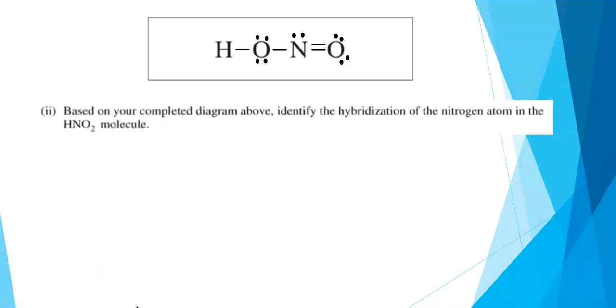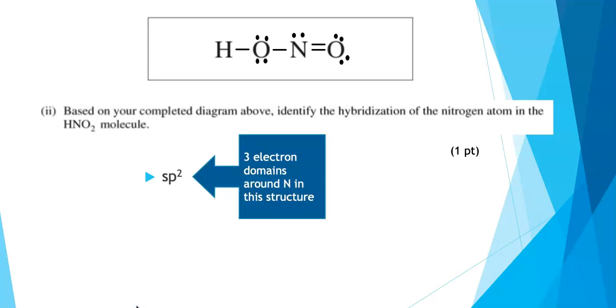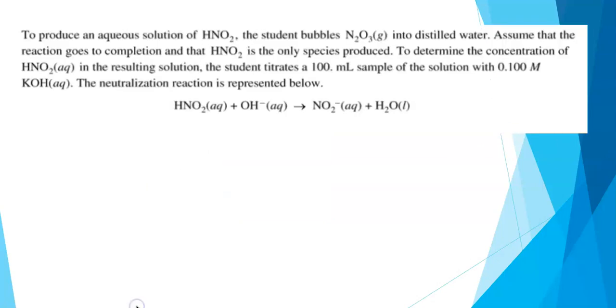The next part asks you to work with the structure you drew. Your answer for part two here needs to be consistent with the Lewis structure. Identify the hybridization of the nitrogen atom in the HNO2 molecule. This was scored out of one point. The answer is SP2. That's actually all you have to write. You don't have to explain it. How do we know it's SP2? There are three electron domains around the nitrogen in this structure. The nitrogen is bonded to two atoms and it's got a lone pair. Three electron domains. That would be an SP2 hybridization.